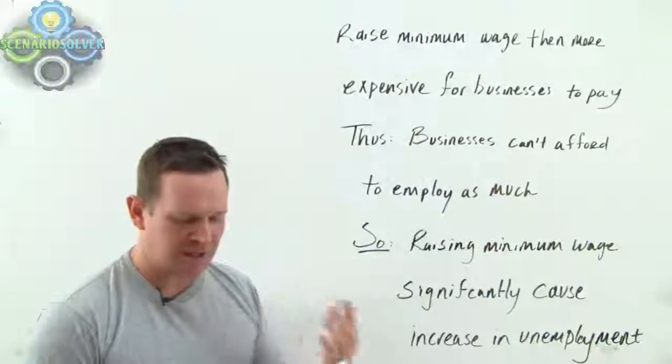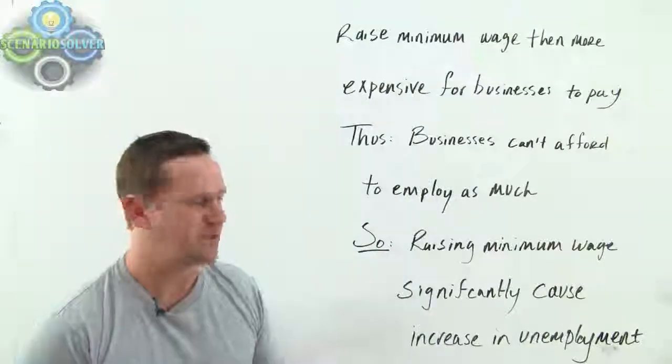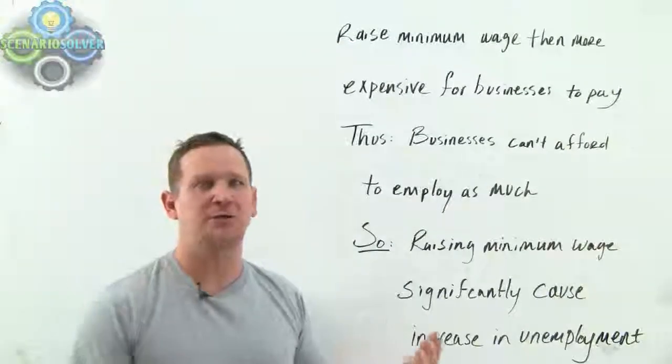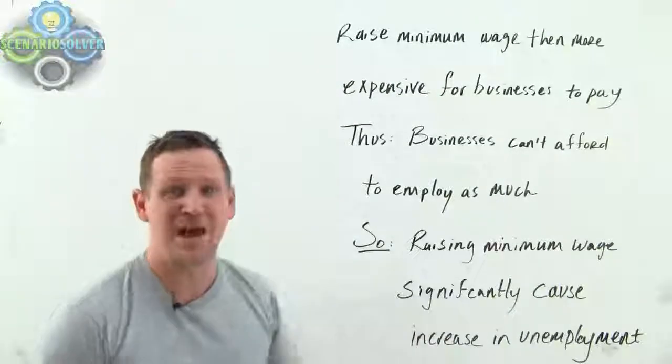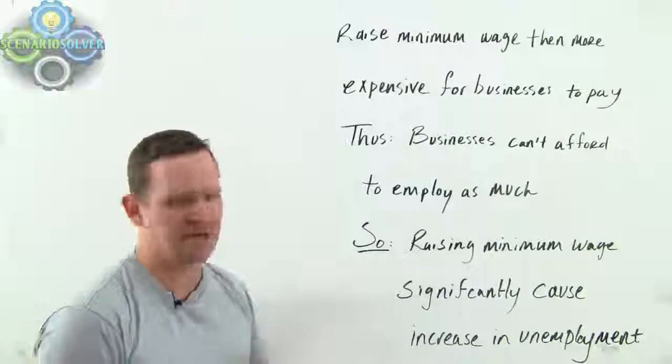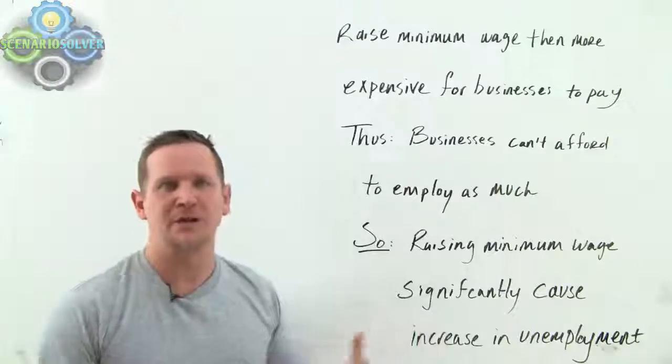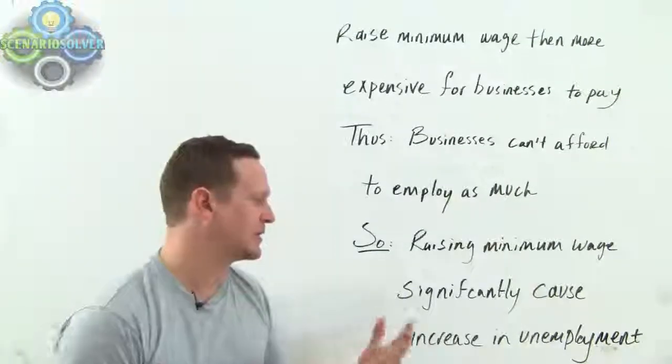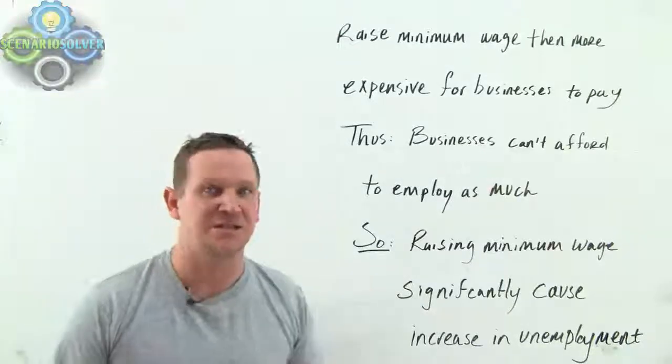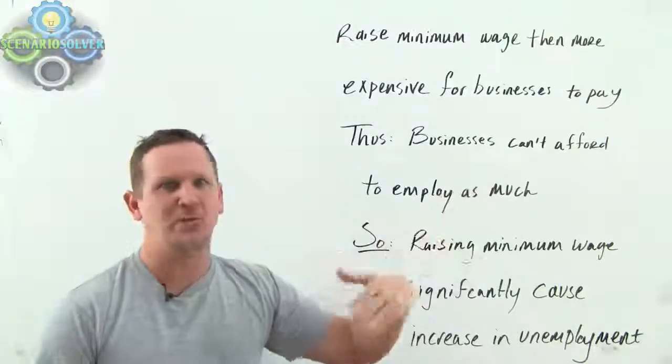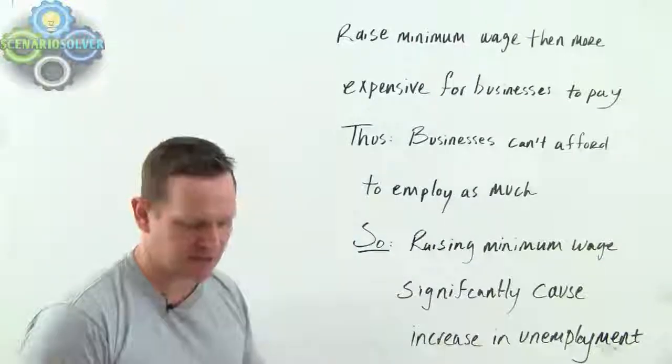We'll start with E. The unemployment rate has been declining steadily in recent years. Well, this is just talking about the unemployment rate. It's probably because according to this argument, we haven't raised minimum wage. Nah, I'm just kidding. This is just talking about what the unemployment rate has been doing over the past years. It doesn't weaken this. It has nothing to do. The unemployment rate, what it's been doing in the past years has got nothing to do with weakening this. Okay.